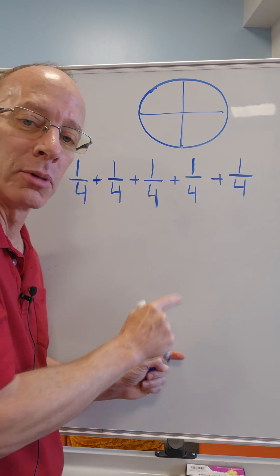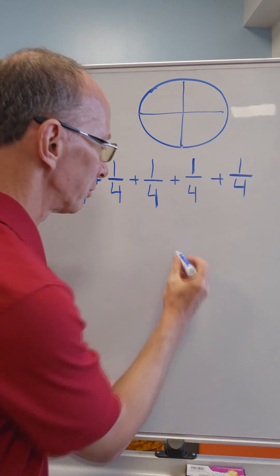This is denominator. That's the numerator. If the numbers on the bottom are all the same, keep it the same. So I'm going to put four right here.